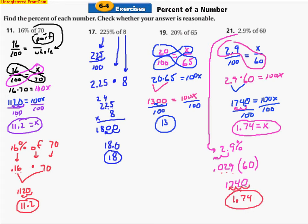That is finding the percent of each number. Now, checking for reasonableness just means estimating to see if your answers make sense. For 16% of 70: 16% is pretty close to 20%. So 0.2 times 70 gives 14. We moved the percent up by 4%, but 14 is pretty close to our answer of 11.2 — so it's reasonable.